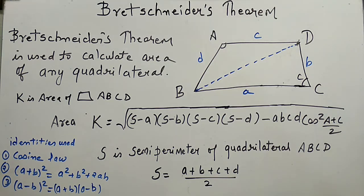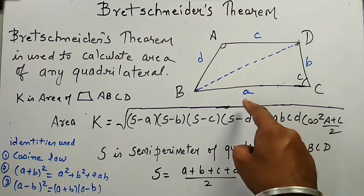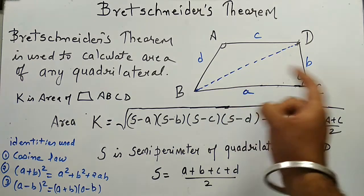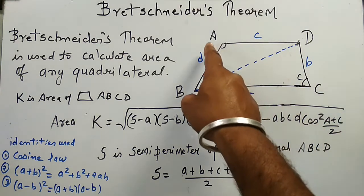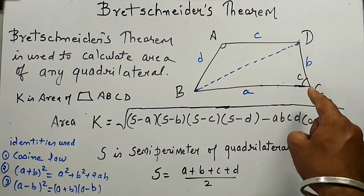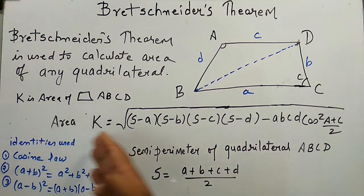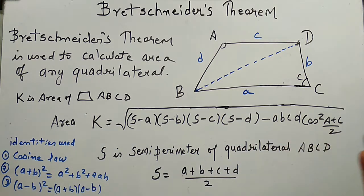The Bretschneider theorem is used for calculating the area of any quadrilateral. If we have a quadrilateral A, B, C, D where A, B, C, D are the respective sides and the angle at vertex A is A and the angle at vertex C is C. According to the Bretschneider theorem, this is the formula obtained for calculation of area of any quadrilateral.